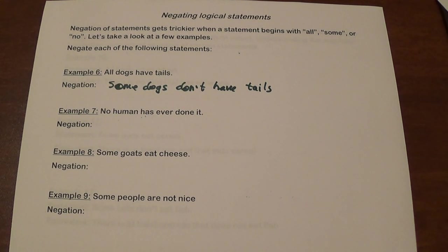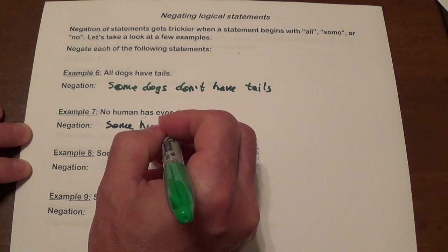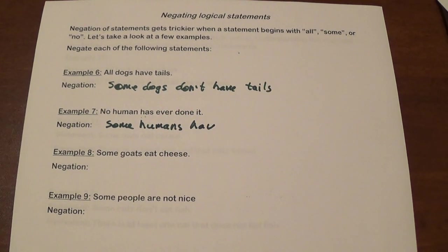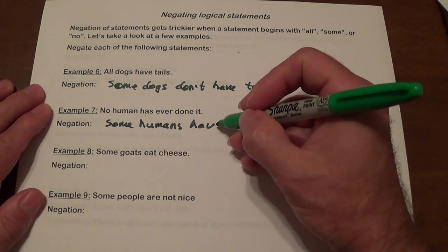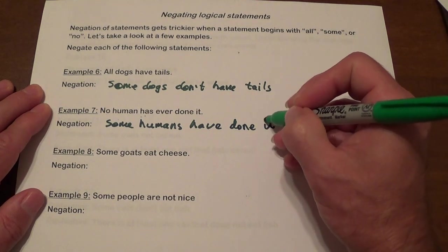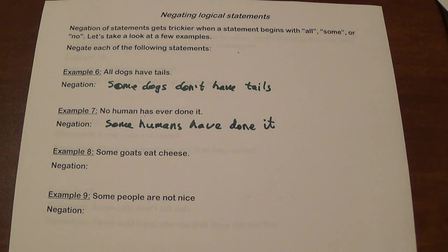Another example: no human has ever done that. To negate that, it will be: some humans have done it. The idea is that when we say no human has ever done that, that means there is not a single human who's done it. To negate that, you have to say there's at least one human who has done it, and to write that, you say: some humans have done it.